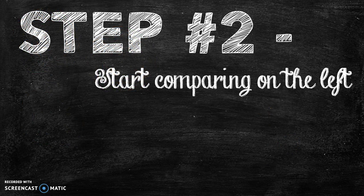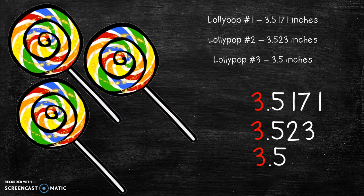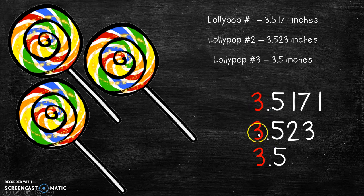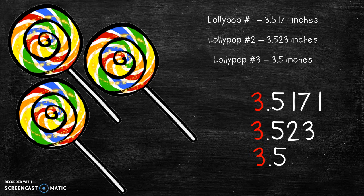So step number two, start comparing on the left. So look at all of our numbers that are on the left. The furthest to the left we could go is right here. This is a three, this is a three, and this is a three. Uh-oh what do we do now? They're all threes.